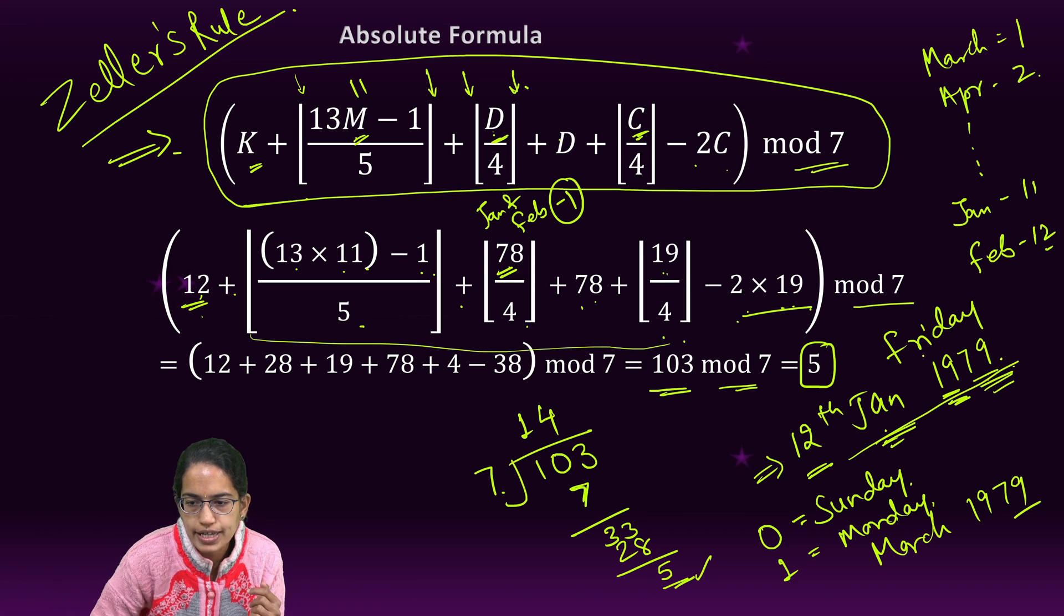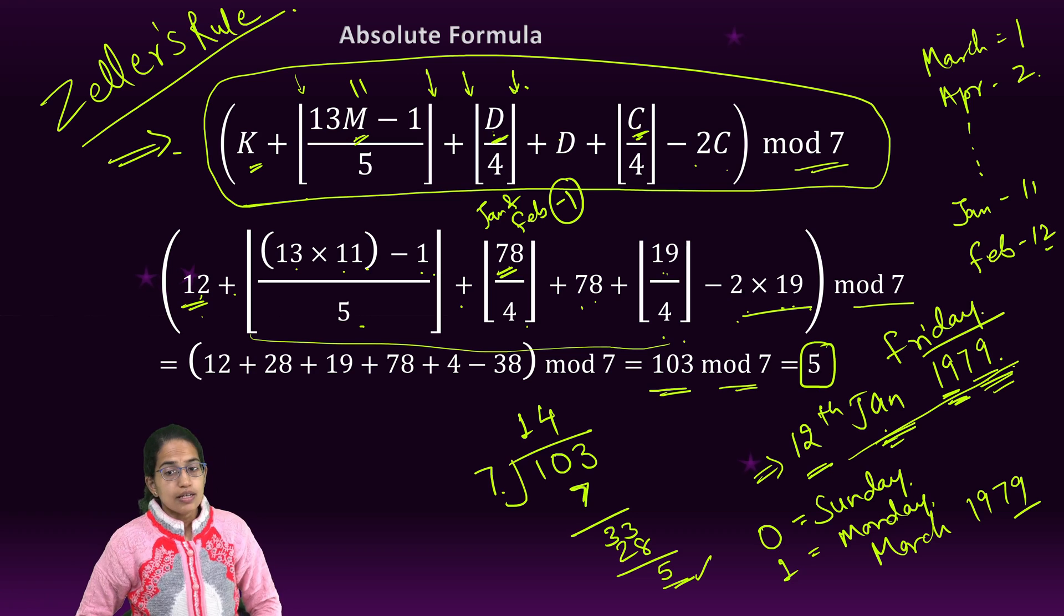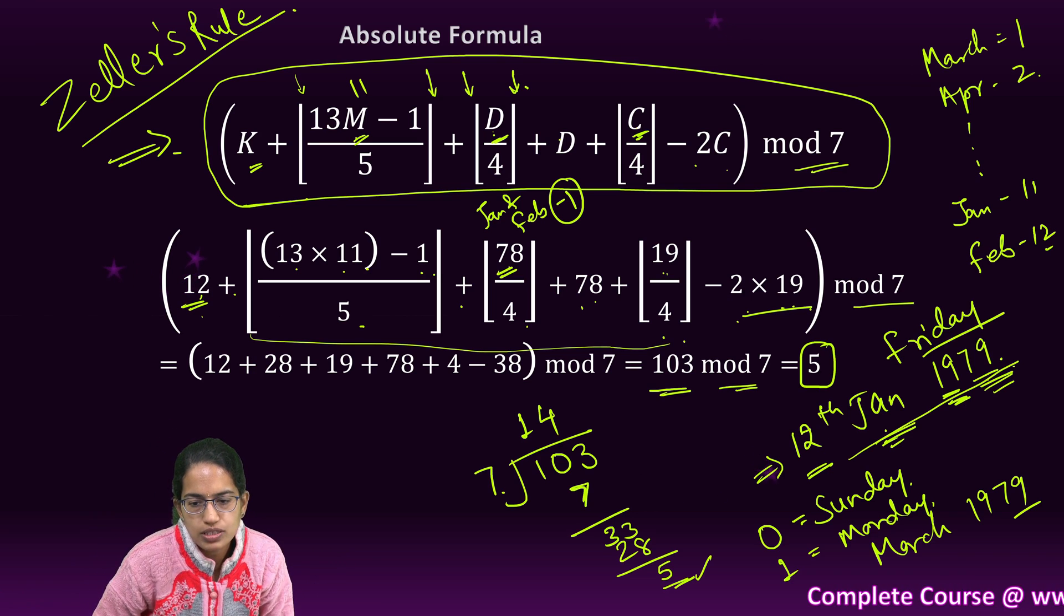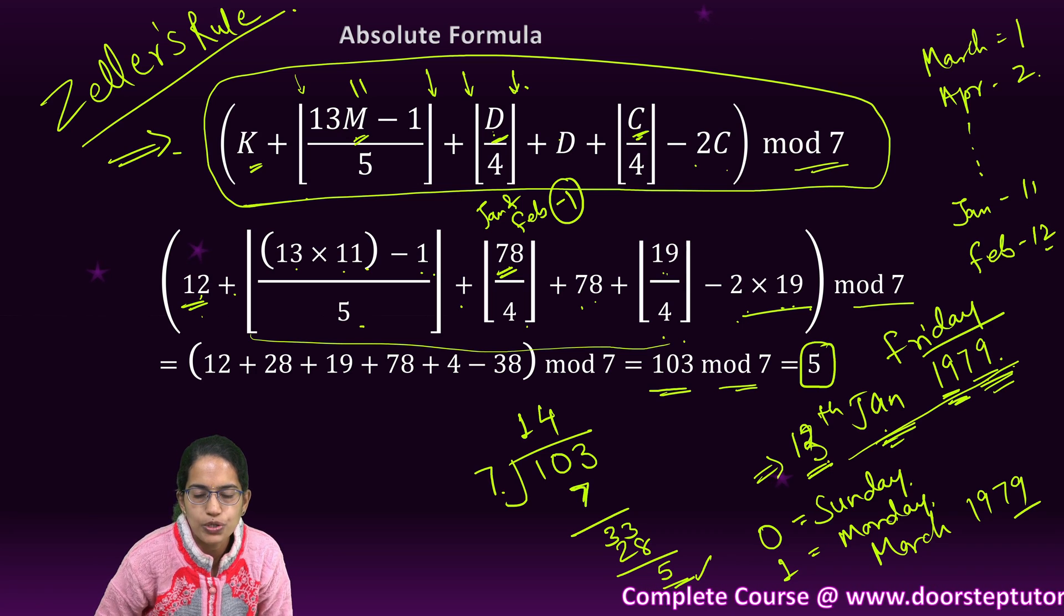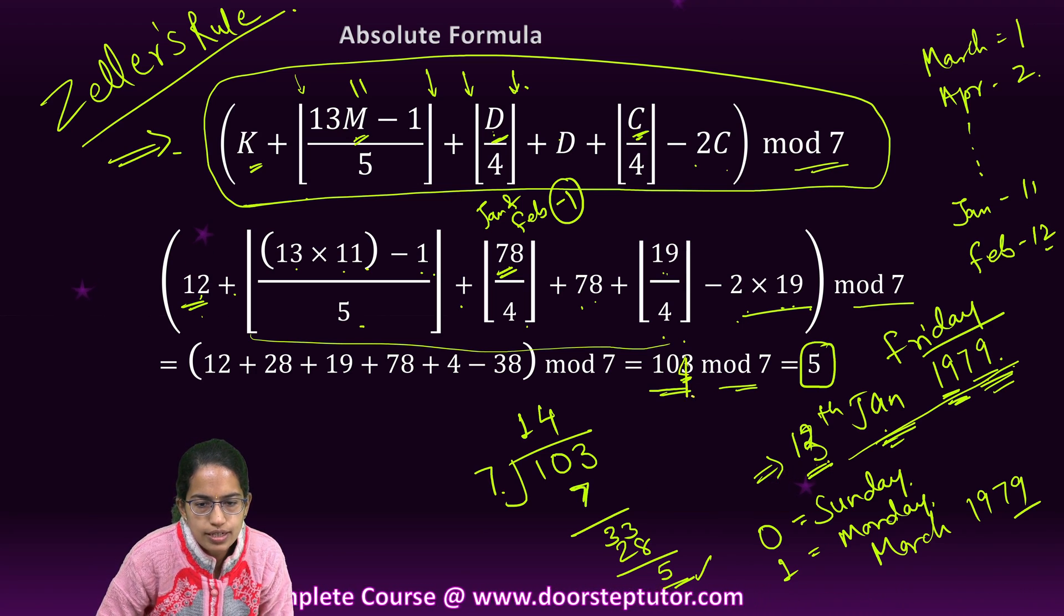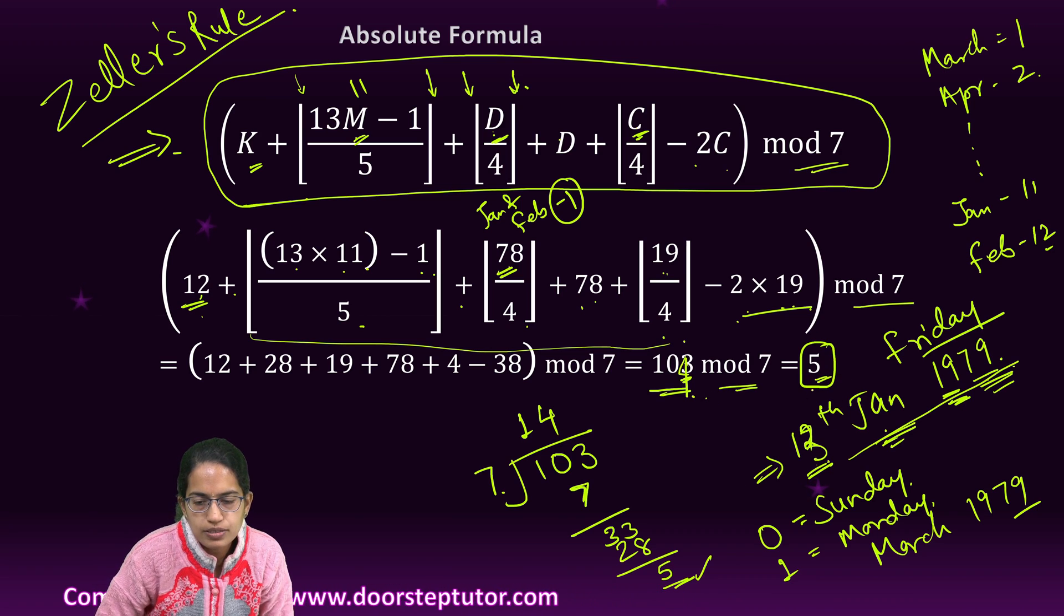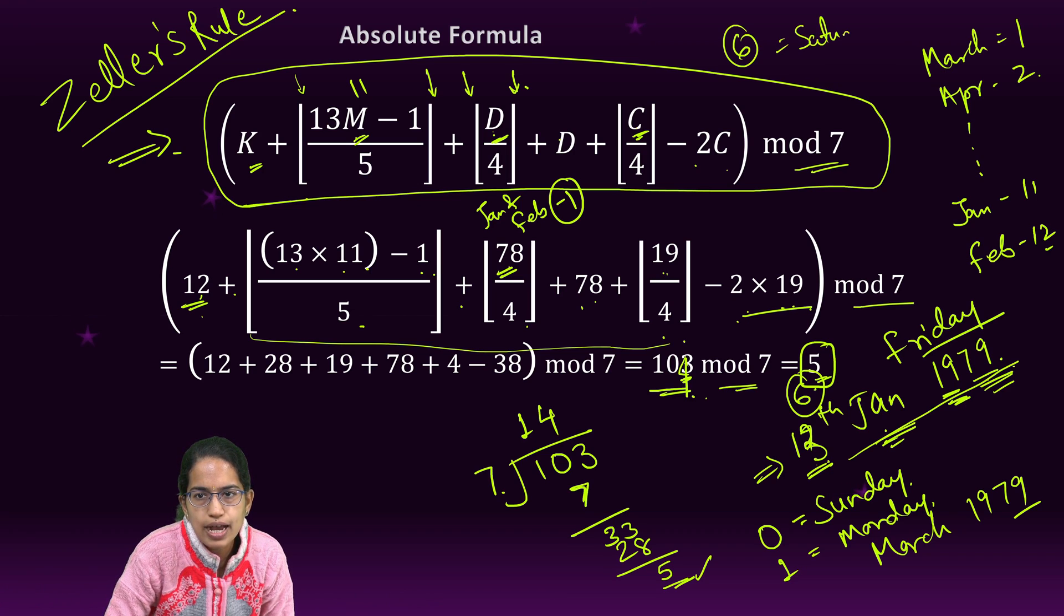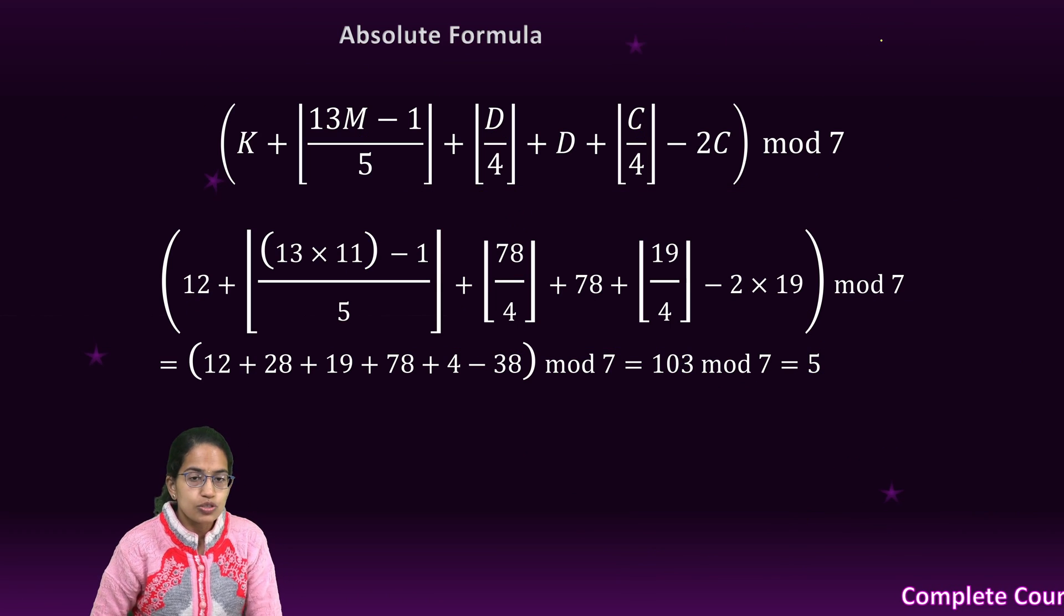We have calculated this. Now remember, the same question: if it was 13th January, how would you do? 13th January, I would have this as 104, 104—that means mod as 6, so remainder is 6. Remainder is 6 means what? Saturday. So my answer in that case would become Saturday. Very clear.